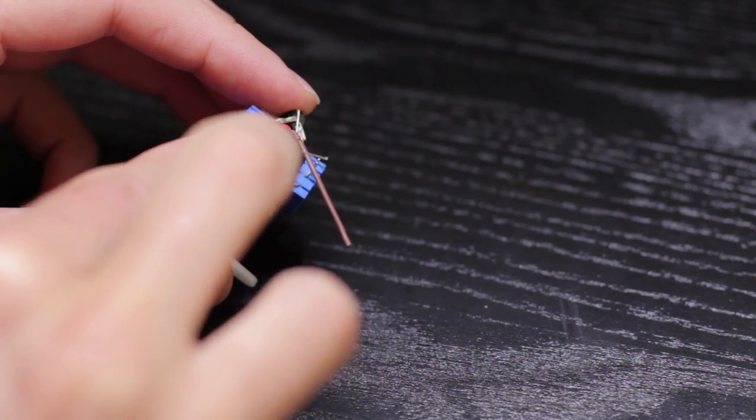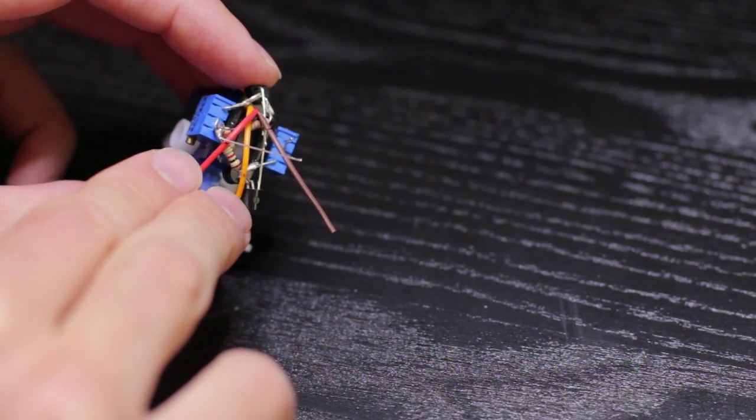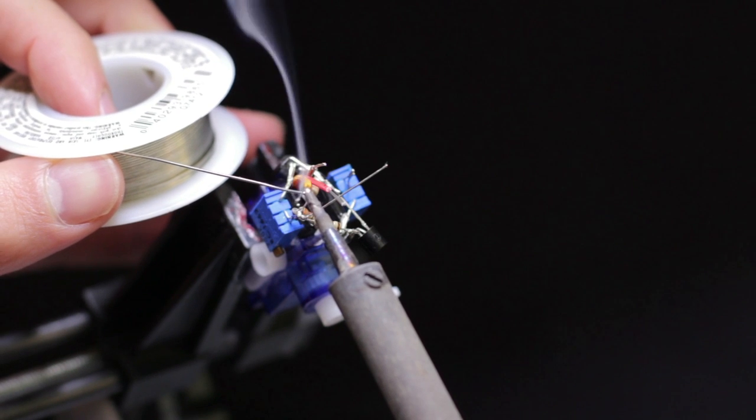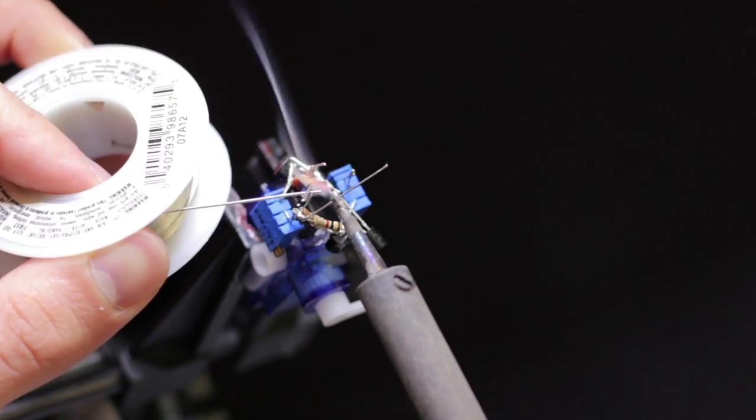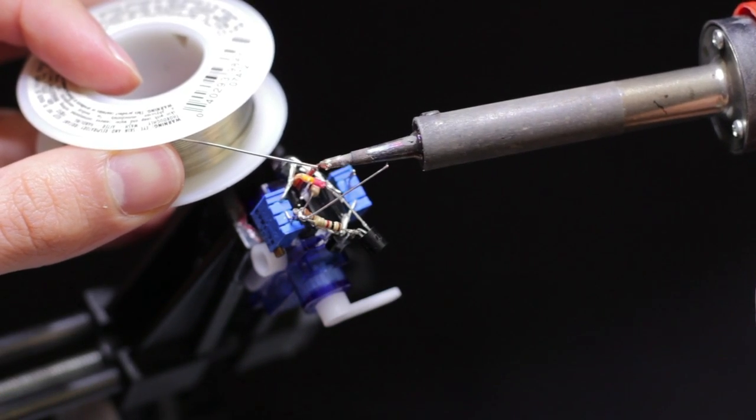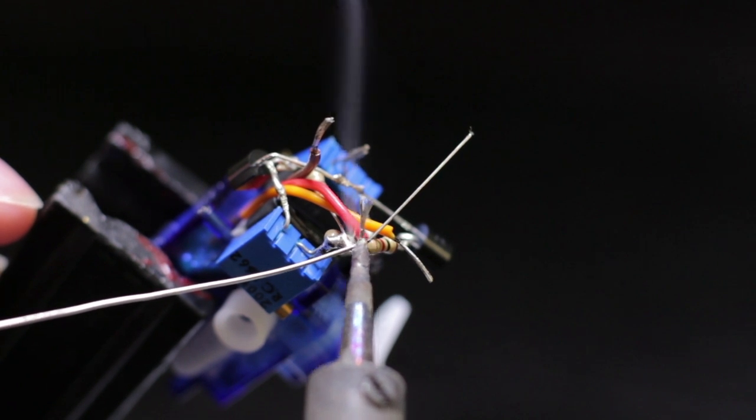Here I'm showing you where each servo wire connects in the circuit. Red is the positive voltage, orange is your signal wire, and brown is your zero volts.